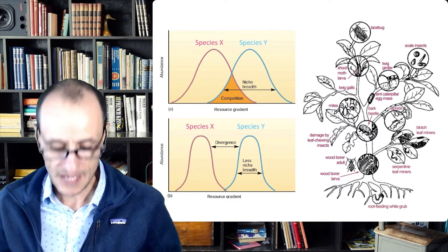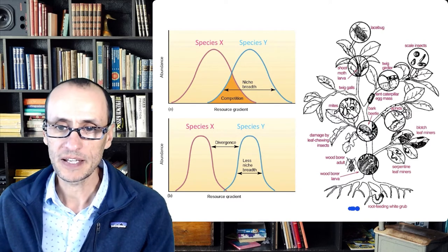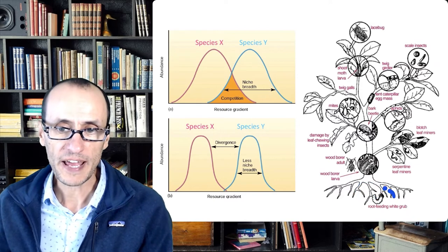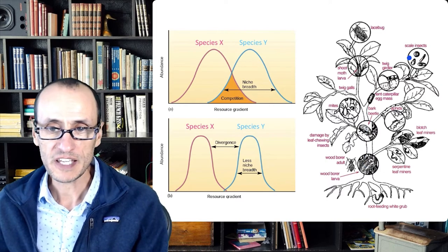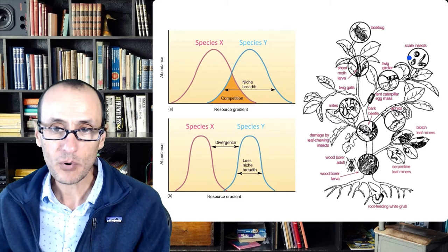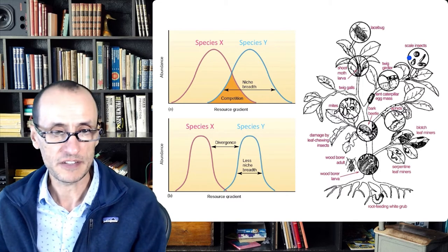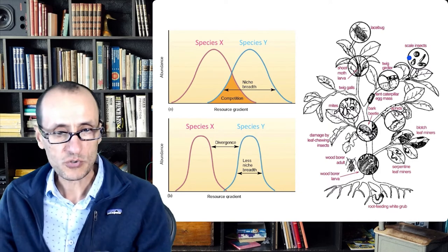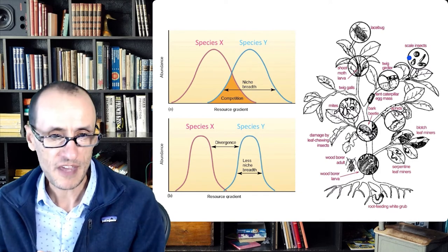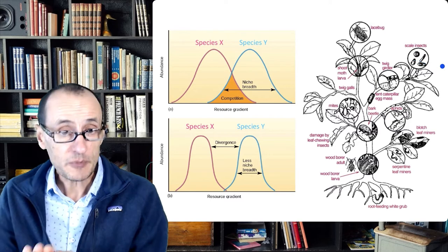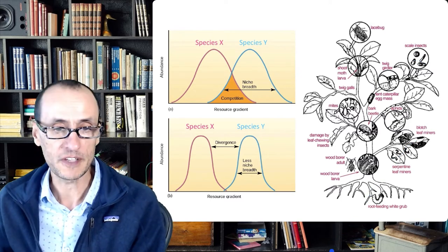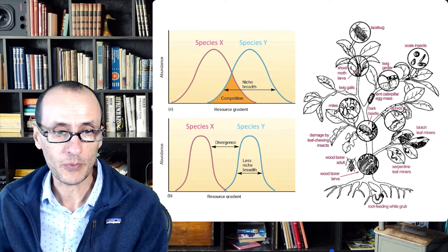An example of resource partitioning: if you look at an individual plant and where organisms feed on it, some might feed on the roots, some might feed on the leaves as leaf miners, some might be stem boring, and others might feed inside the seeds. These are all examples of resource partitioning. Not all of them are feeding on the same thing. If they were, they would be subject to competition, and one species would do better than the other — or at least there would be selection for one species to get better at utilizing that resource.